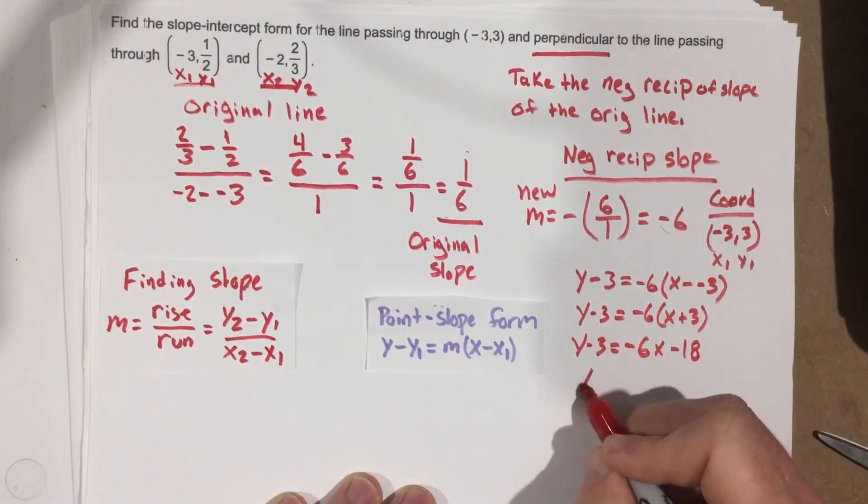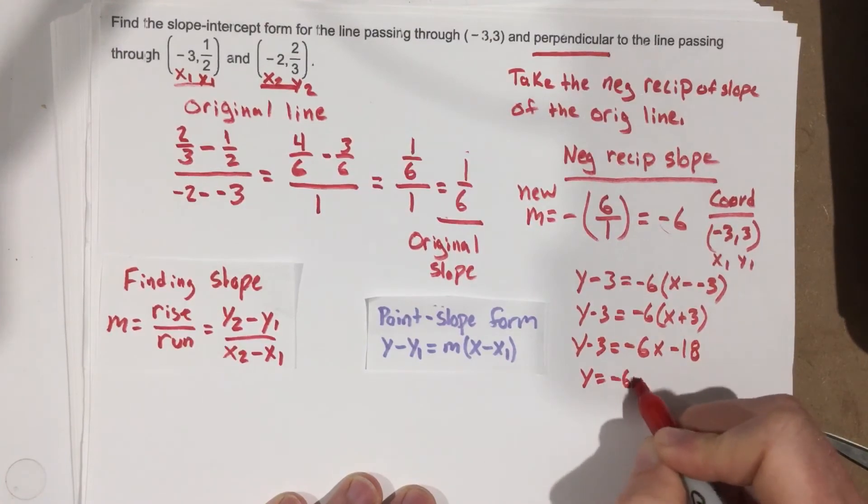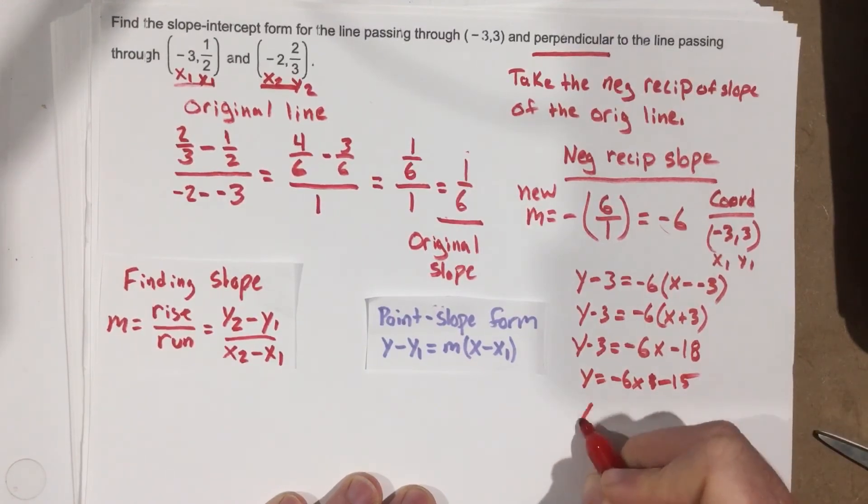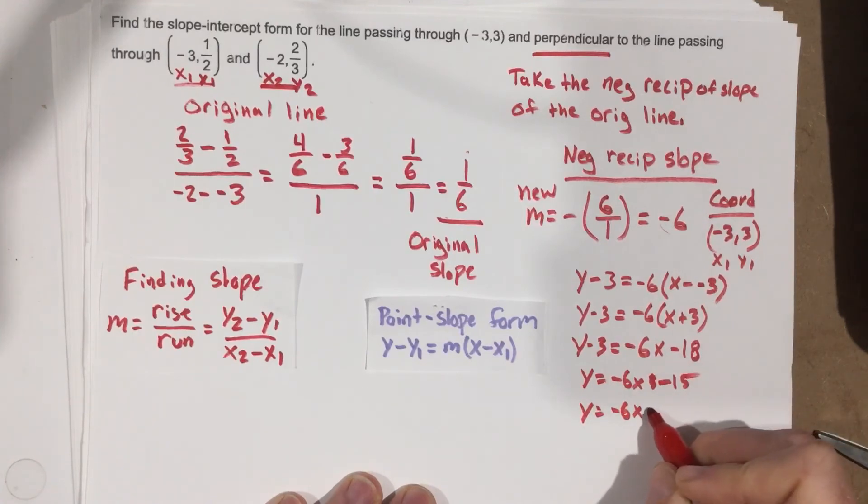Add the 3 over, and I get y equals negative 6x minus 15. And I'm going to rewrite that so it looks better. y equals negative 6x minus 15.